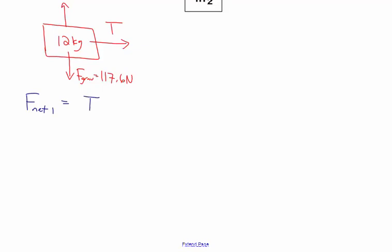I need to add all of the individual forces together. The normal force and the force of gravity cancel, and the only thing left is the tension in the chord. Newton's second law gives us a relationship between the net force, the mass, and the acceleration: net force equals mass times acceleration. So the net force on this 12 kilogram box equals 12 kilograms times the acceleration A. Putting those two things together, the tension in the chord equals 12A.